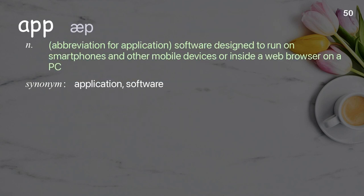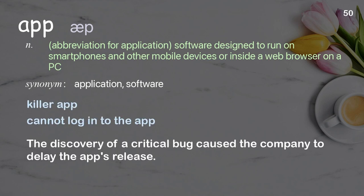App: abbreviation for application; software designed to run on smartphones and other mobile devices or inside a web browser on a PC. Examples: killer app; cannot log into the app. The discovery of a critical bug caused the company to delay the app's release.